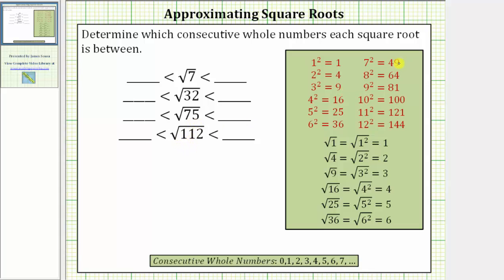Looking at the notes on the right, we have a list of perfect squares in red, and then below, here are several examples showing these square roots of perfect squares simplify perfectly to whole numbers. And then finally, here we have a list of consecutive whole numbers.